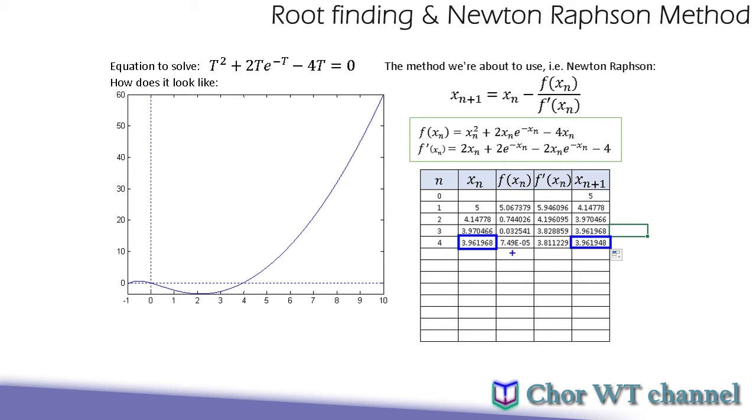And then you can also observe that this value at f(xn), it should be very small, which is close to 0. So we can say now our solution is acceptable, whereas our t here will be equal to 3.96.